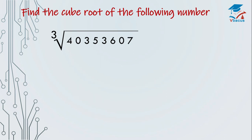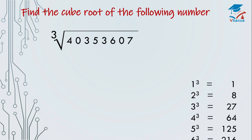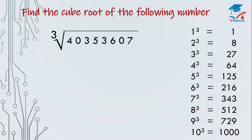Let us go to the next sum. Find the cube root of 40353607. Again, the chart is here. Split it into 3 parts. Again, the answer will come in 3 digits. See the unit digit — where is 7? Here, 27 — so cube root of 27 is 3. So 3 will come at the unit place.